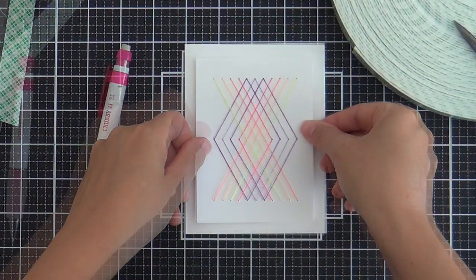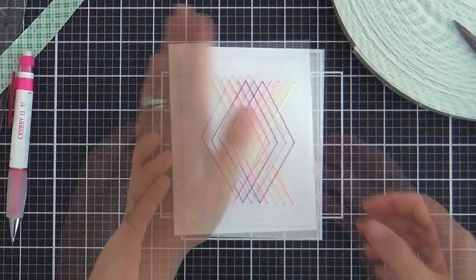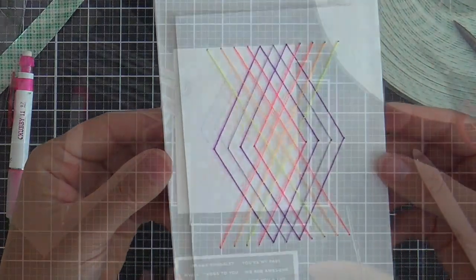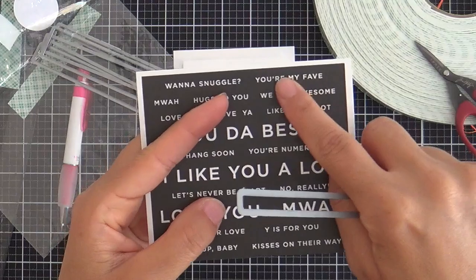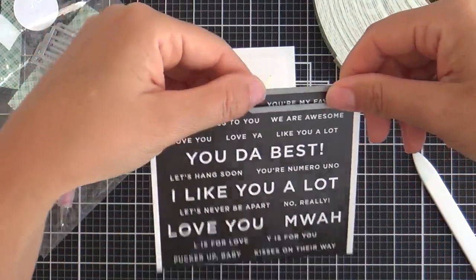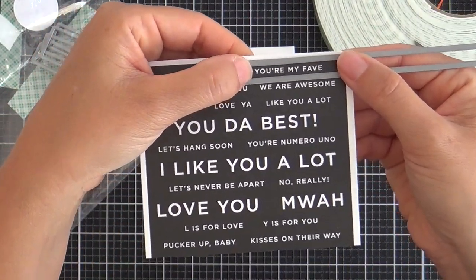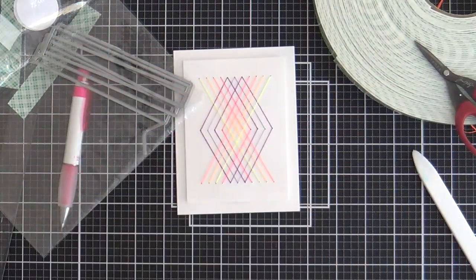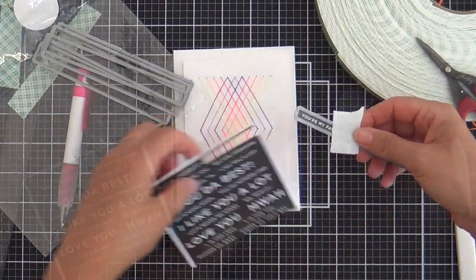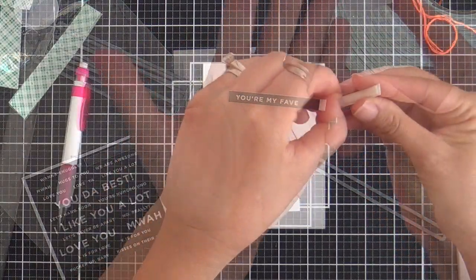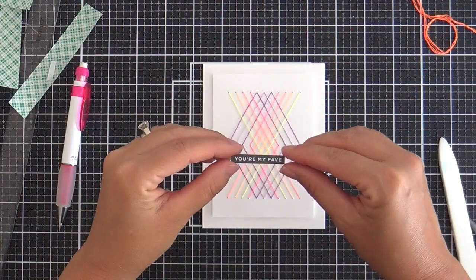And so I'm popping this up on a white card base. And then for a sentiment, keeping it very simple. I'm using one of these reverse love sentiment strips. It says you're my fave. I'm going to die cut it with one of the sentiment label dies. And she's getting toasty, like I said in my previous video. It's getting warm here in Germany. And we're on the third floor in our apartment building. So I've got all the windows open.